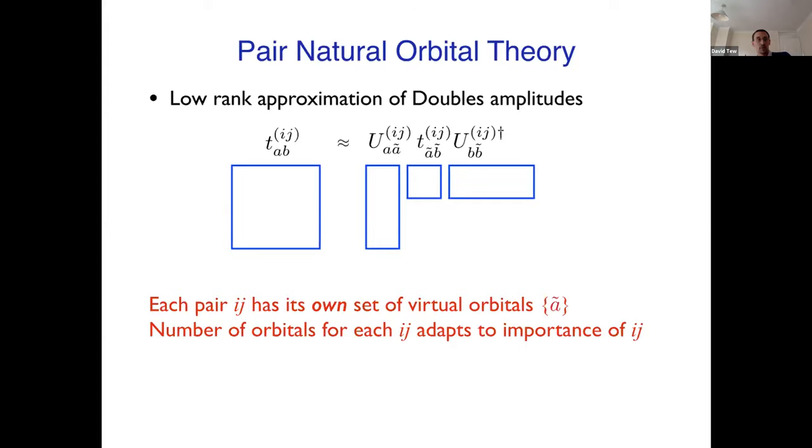So for every pair of orbitals ij, you approximate the matrix of coefficients ab in this way. You have a very small set of active orbitals a tilde, b tilde that you're going to use for your calculation and you have the orbital rotation coefficients that take you from the full set down to this subset. The particular thing about pair natural orbital theory is that every orbital pair has its own set of virtual orbitals that are adapted to the characteristics of the correlation for that pair, and indeed the number of orbitals that you have for each pair of electrons is different.